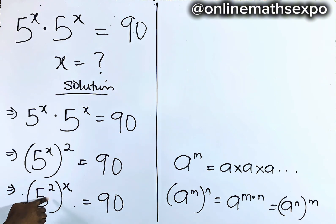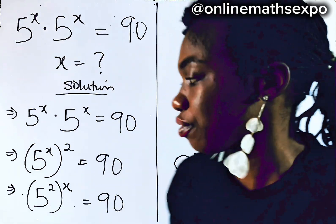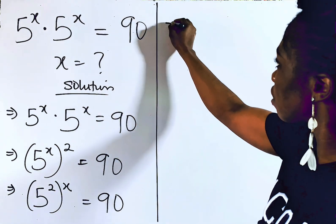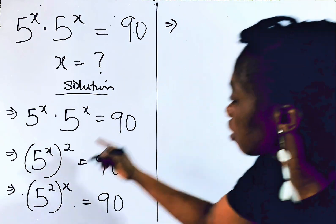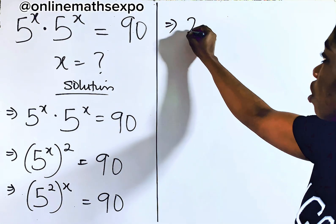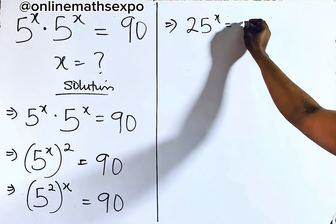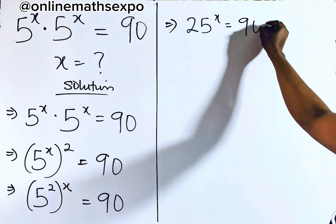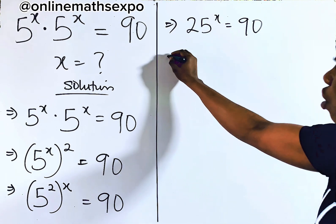Remember, 5 raised to the power of 2 is 5 multiplied two times. So this gives us 25 raised to power x is equal to 90.